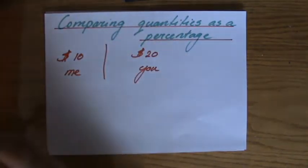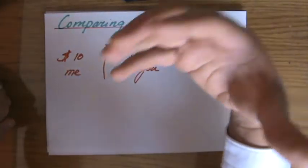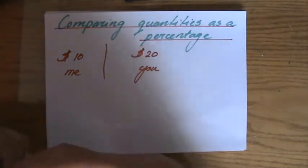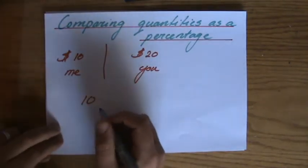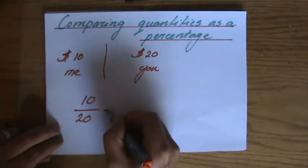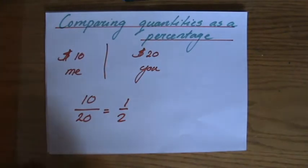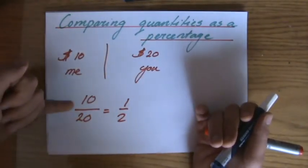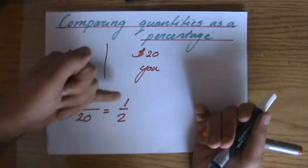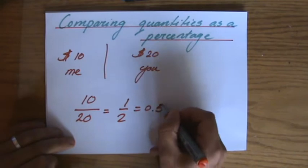Now if somebody would ask me, compared to you, how much pocket money do I get? So I get 10, and you get 20, so I only get, well I get half of what you get. I'm comparing my pocket money with your pocket money. 10 over 20 is a half. Or if you like, is 0.5.